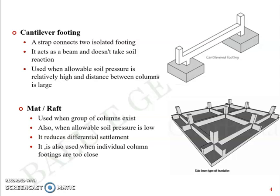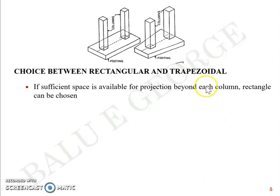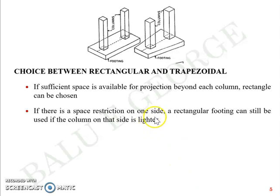The choice between a rectangular and trapezoidal combined footing is quite crucial. If sufficient space is available for projection beyond each column — say at least 20 to 30 centimeters — a rectangular combined footing can be chosen. If space restriction exists on one side but the column on that side is lighter, the rectangular footing can still be used, since the lighter column requires less bearing area.